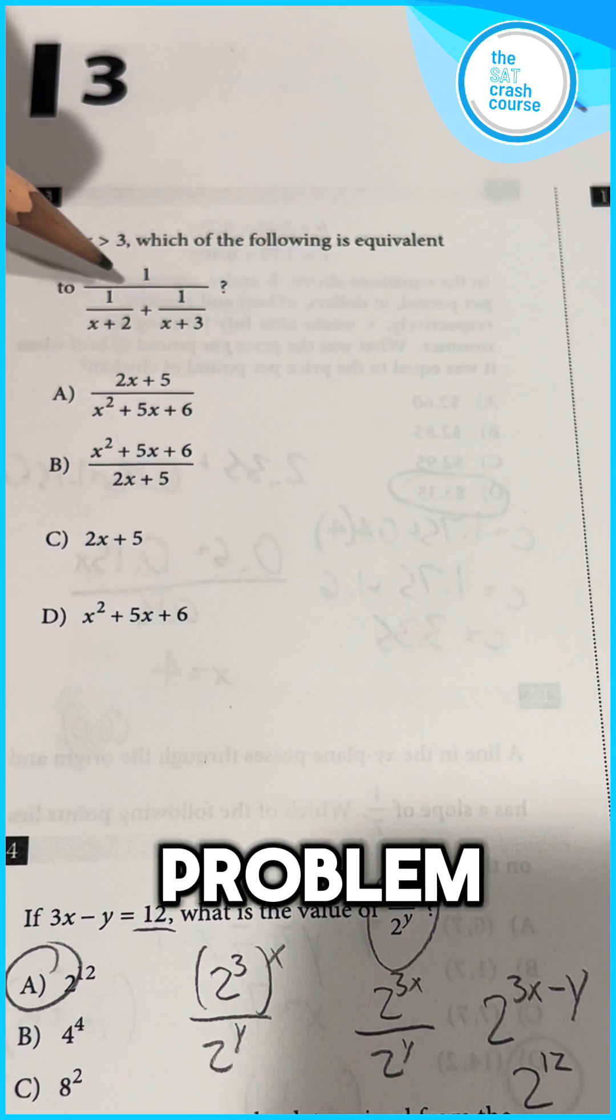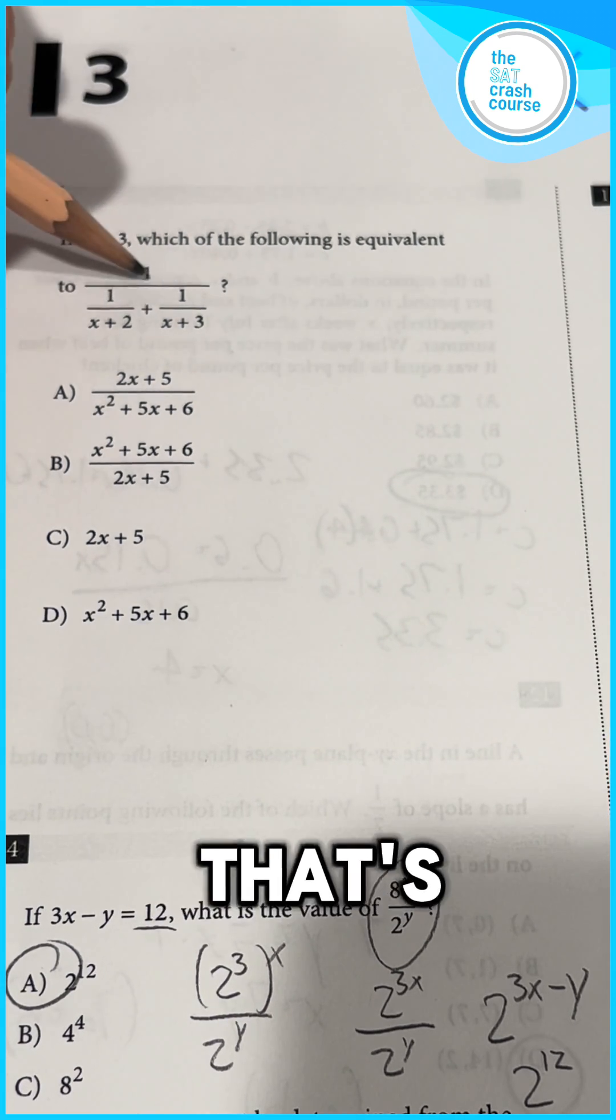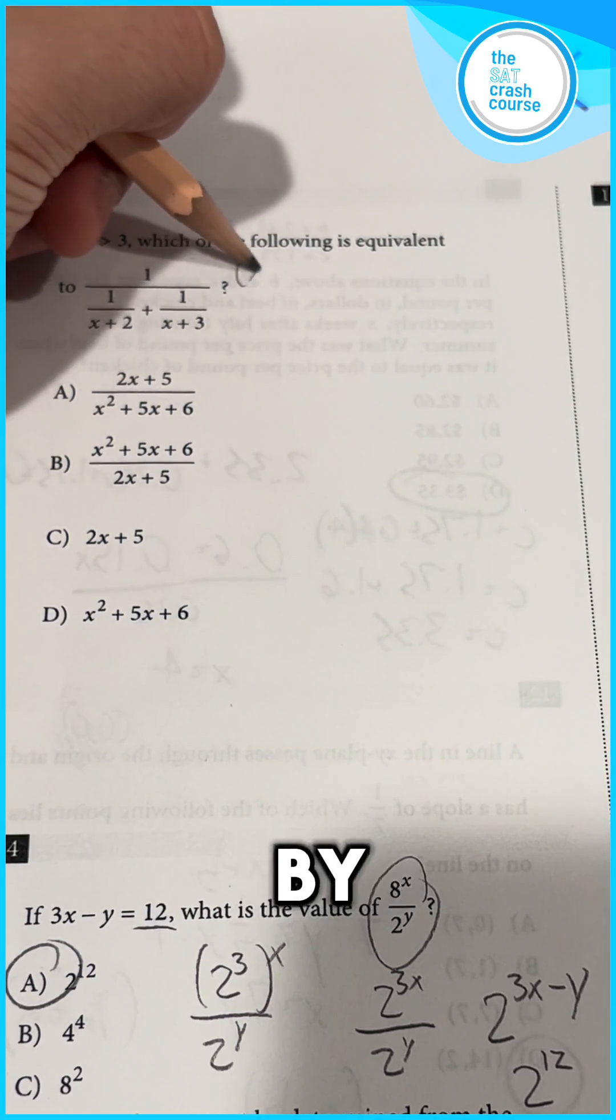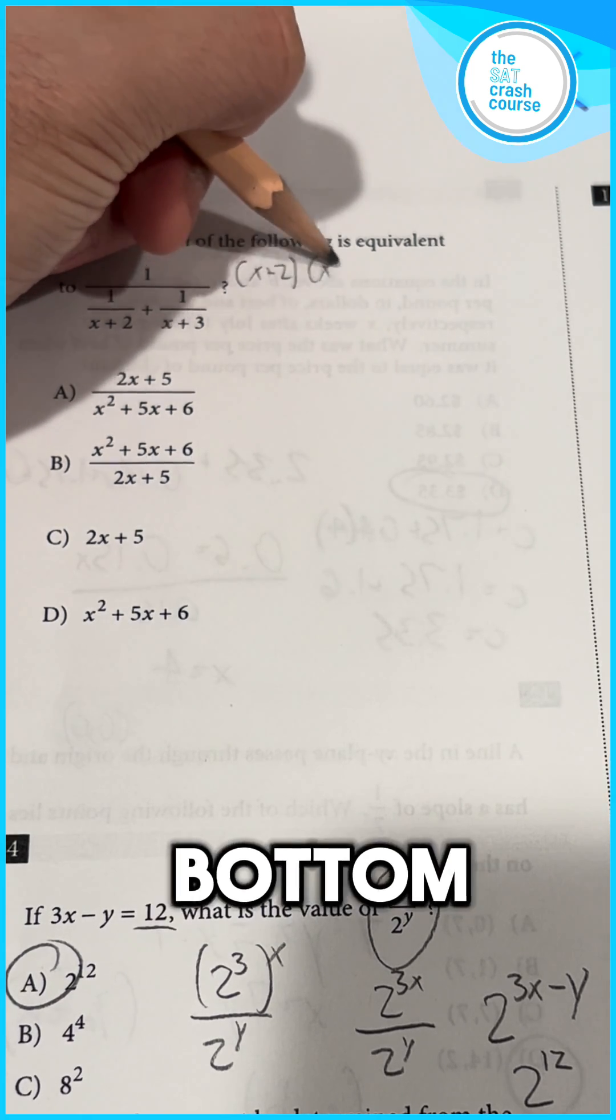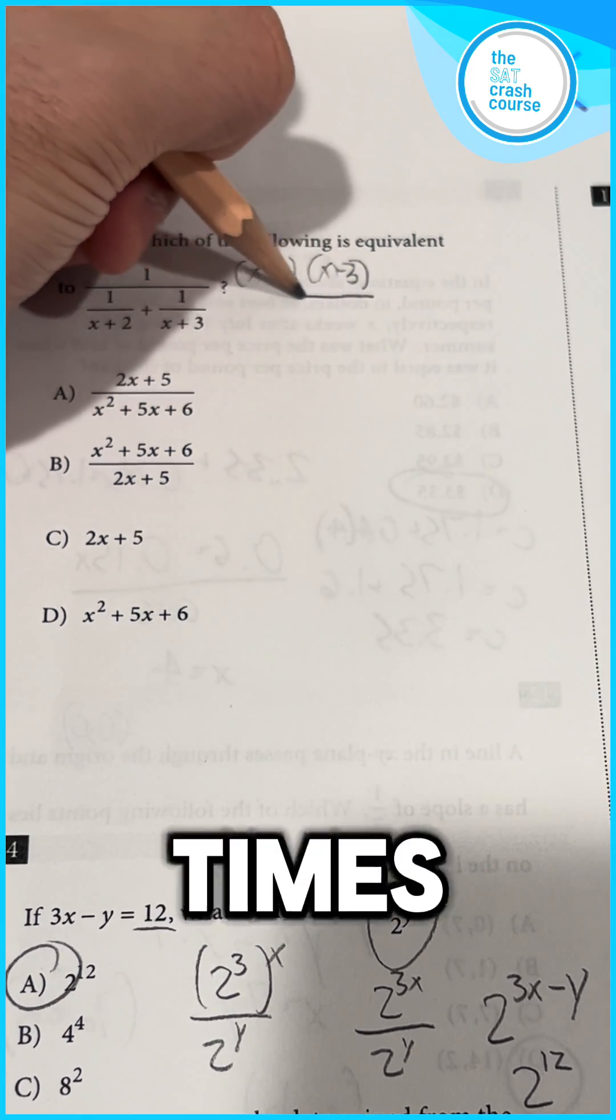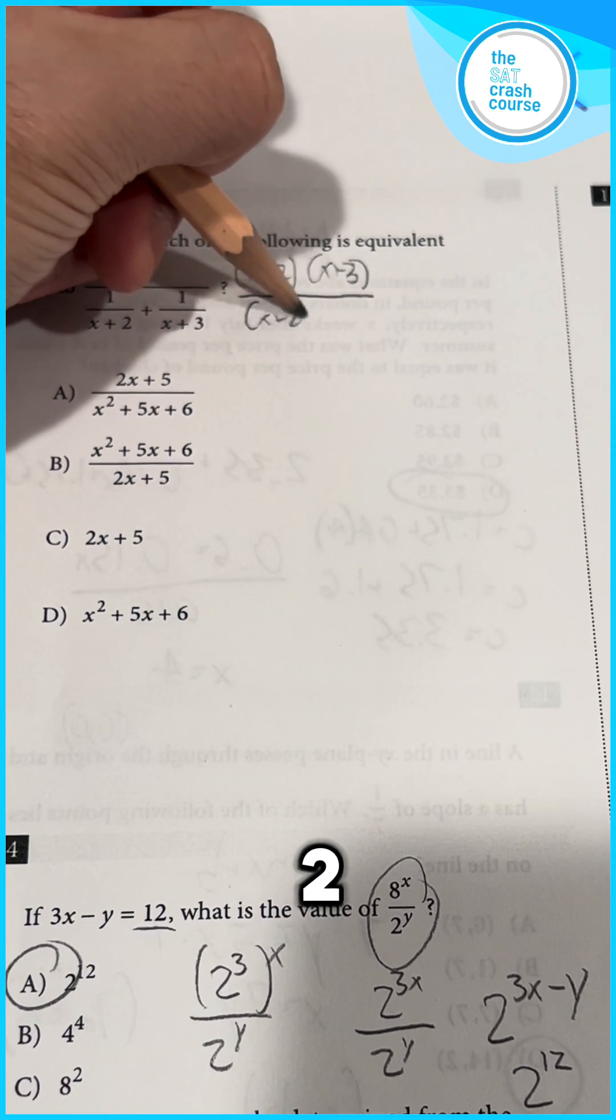To start this problem, we need to eliminate the double fraction that's occurring within this expression. We can do this by multiplying the top and bottom by x plus 2 times x plus 3 over x plus 2 times x plus 3.